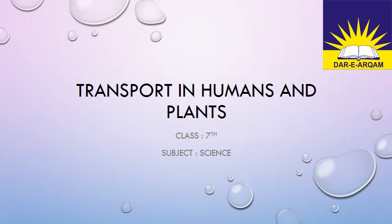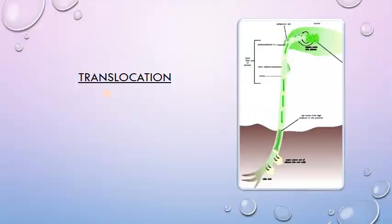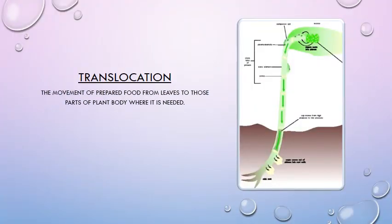Bismillahirrahmanirrahim, assalamu alaikum. Seventh class, I hope you will be fine. We were discussing chapter number two which is transport in humans and plants. Today we are going to discuss translocation. What is translocation? It is the movement of prepared food from leaves to those parts of the plant body where it is needed.